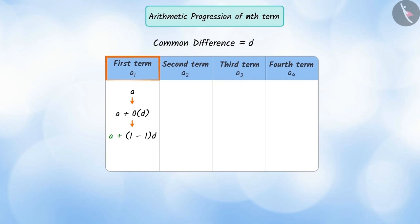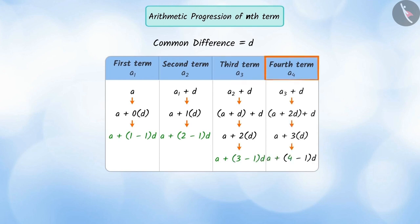The second term, A2 as A plus 2 minus 1 multiplied by D. The third term, A3 as A plus 3 minus 1 multiplied by D. And the fourth term, A4 can be written as A plus 4 minus 1 multiplied by D.